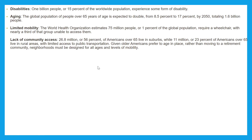Regarding lack of community access: 26 million, or 56%, of Americans over 65 live in suburbs, while 11 million, or 23%, of Americans over 65 live in rural areas with limited access to public transportation. Given that older Americans prefer to age in place rather than moving to a retirement community, neighborhoods must be designed for all ages and levels of mobility.